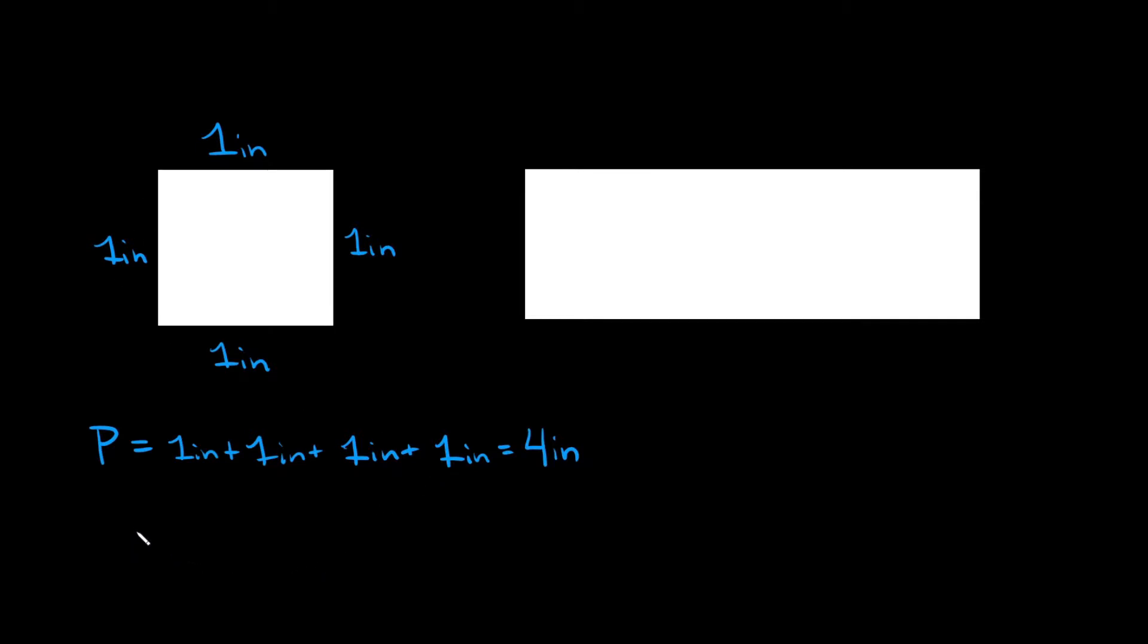Now if you wanted to switch it up a little bit and find the area. The way you find the area of a shape or square specifically is by multiplying two of the sides together. And specifically we're talking about the length and the width.